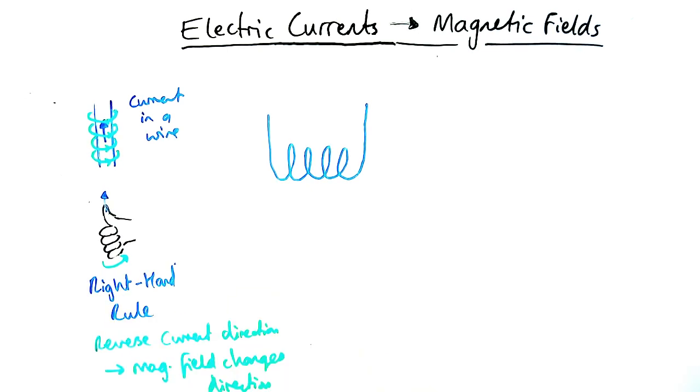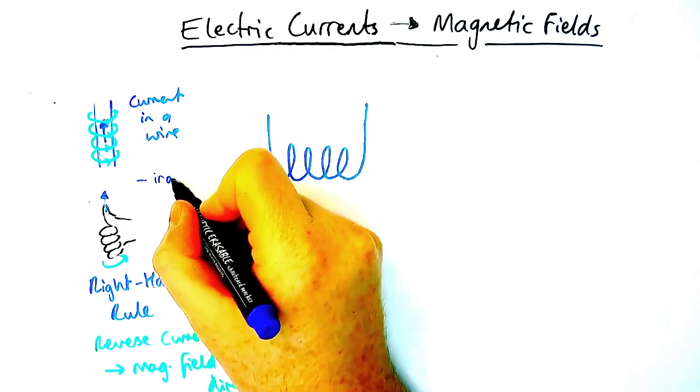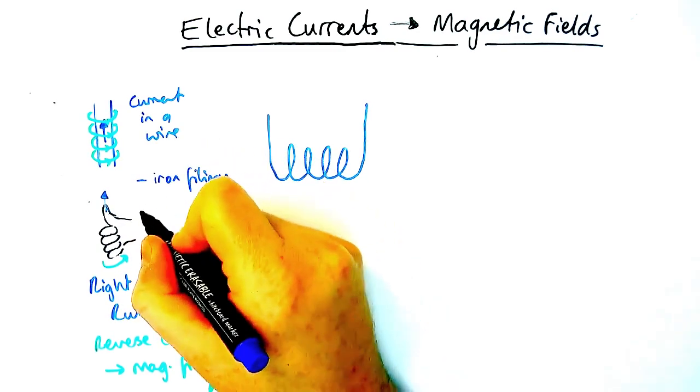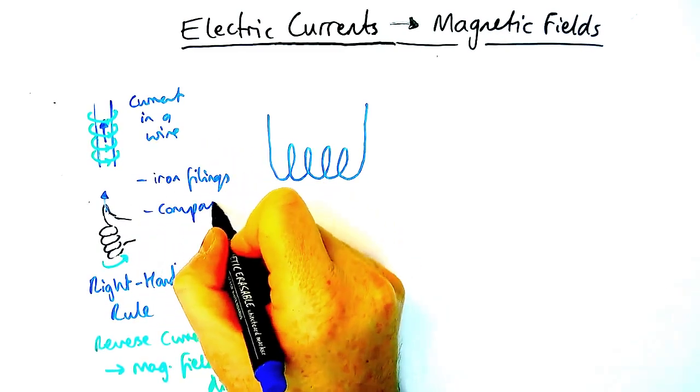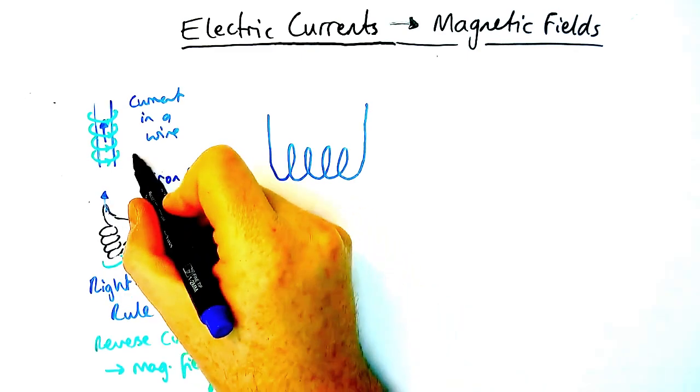If I was to try and find these field lines I could use iron filings to see the circular pattern on a piece of card. I could also use compasses, same as for regular magnetic fields.